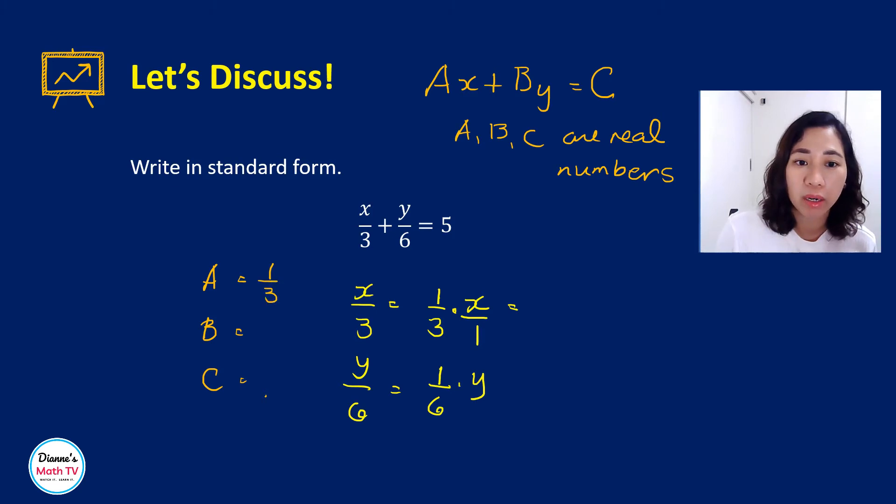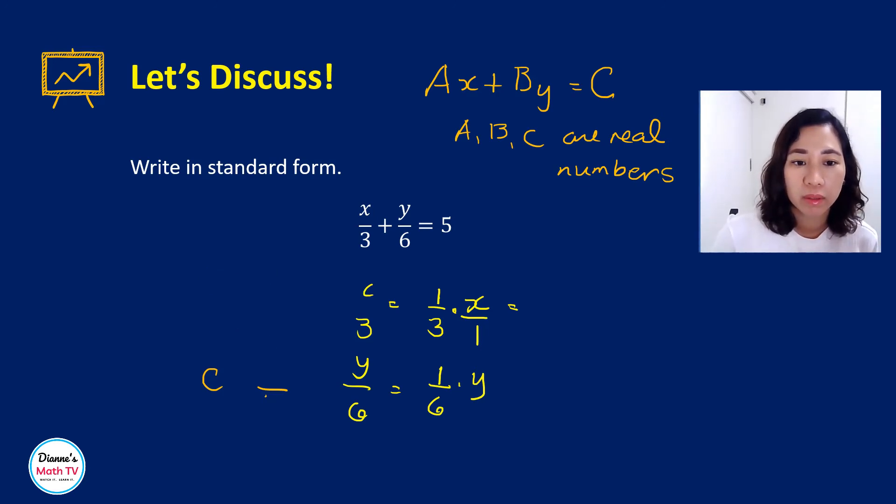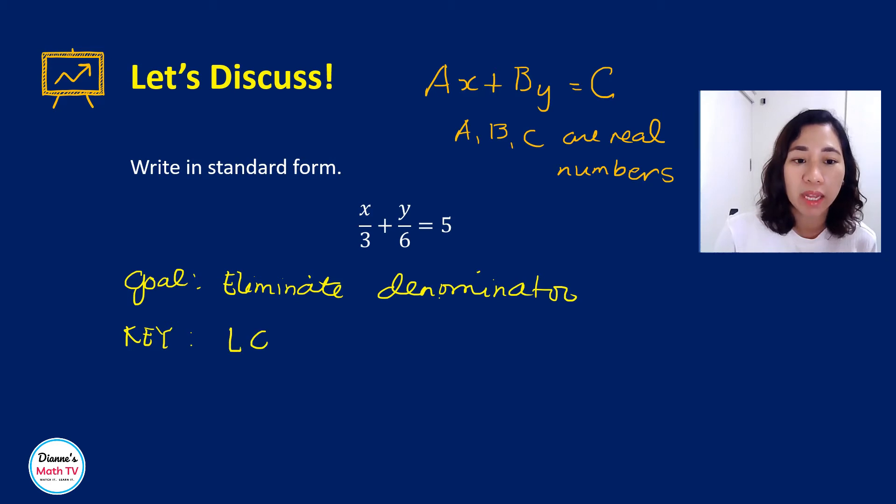So our A is 1 third, our B is 1 sixth, and your C is 5. But of course, we do not want to work with fractions. So what we want to do here is to eliminate the denominator. And how do we eliminate the denominator? So again, this is already in standard form, but we just want to write it in another form in such a way that we do not have any fractions. So our goal is to eliminate the denominator. The key there is by multiplying both sides by the LCD. What is the LCD? The smallest number that can be divided both by 3 and 6. That is 6.